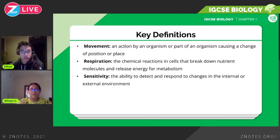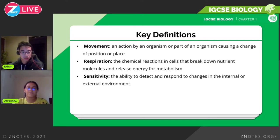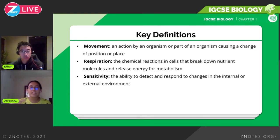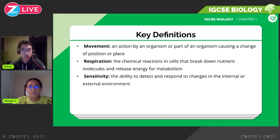Movement is an action by an organism or part of an organism that causes a change in its position or place. So if I'm moving my arms, that's part of an organism moving, or the whole organism itself can walk. Plants also move — though it might not be obvious to the human eye. Around chapter eleven you'll look at how plants move towards the sun, away from the sun, and towards water. Bacteria and fungi also have different types of movement, not always visible.